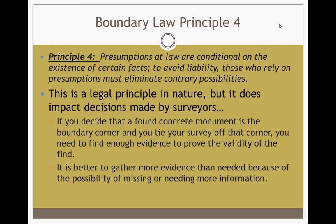Principle four: presumptions at law are conditional on the existence of certain facts. We do this to avoid liability. Those who rely on presumptions must eliminate contrary possibilities. If you decide that a found concrete monument is the boundary corner, you need to find enough evidence to prove the validity of the find — either by parole evidence, collected evidence from other surveyors, or definition from other boundary corners. It's better to gather more evidence than needed because of the possibility of missing or needing more information later.